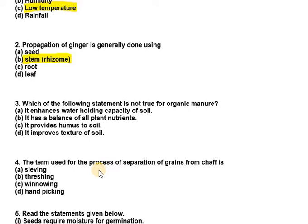The third question: which of the following statements is not true for organic manure? It enhances water-holding capacity — that's true. It has a balance of all plant nutrients — this is false, because the basic nutrients required by plants are nitrogen, phosphorus, and potassium, but phosphorus and potassium cannot be added to soil by organic manure.